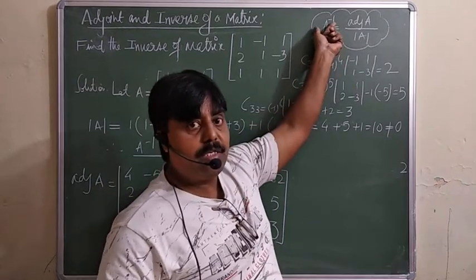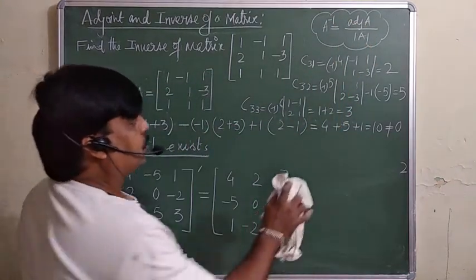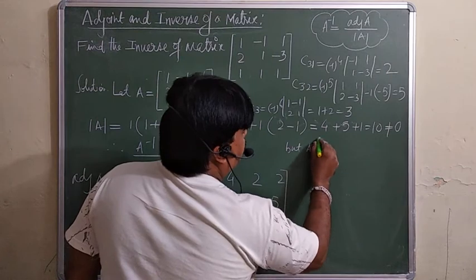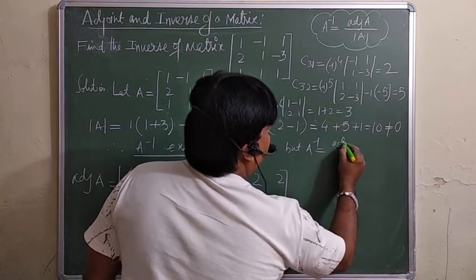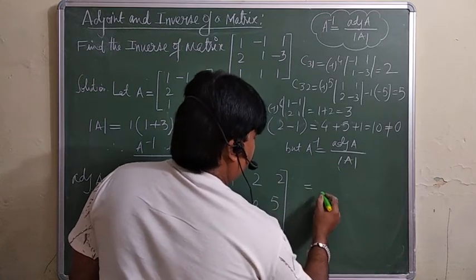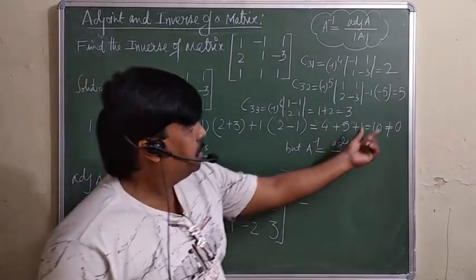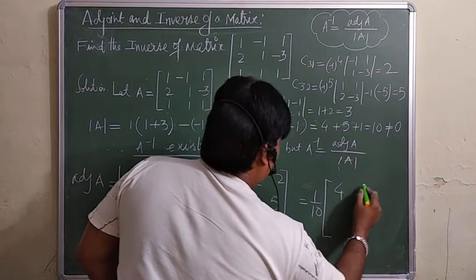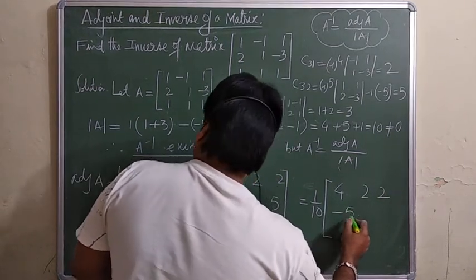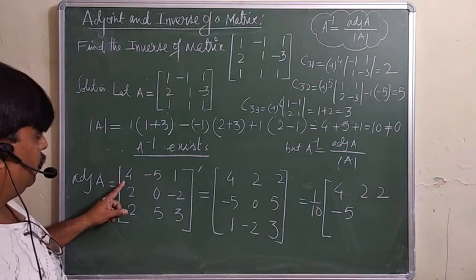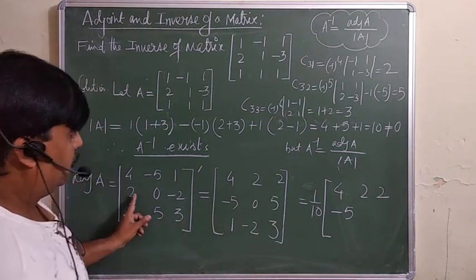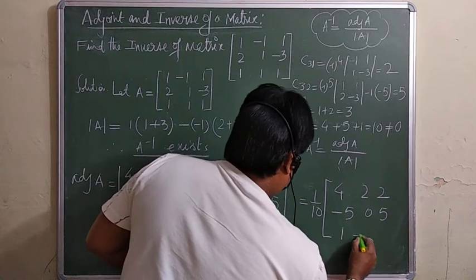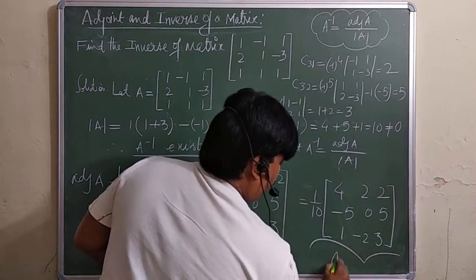Since we want A inverse: A⁻¹ = adj(A) / det(A). The determinant is 10, so A⁻¹ = (1/10) × [4, 2, 2; −5, 0, 5; 1, −2, 3]. This is the inverse of the matrix.